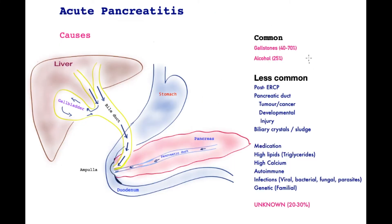Here are the causes of pancreatitis, the commonest being gallstones. Going back to this cartoon, these gallstones may travel out of the gallbladder and enter the bile tube itself, and in doing so they are transported down into the bile tube. It is when they reach near the pancreas that they can trigger an attack of pancreatitis. This can happen in between 3 and 7 percent of patients with gallstones.